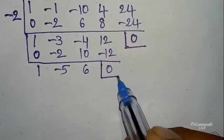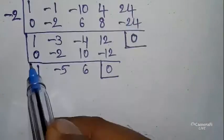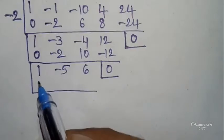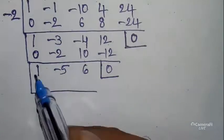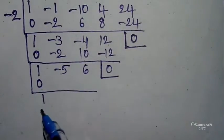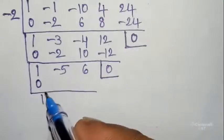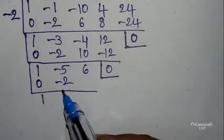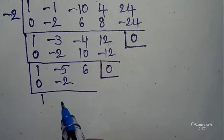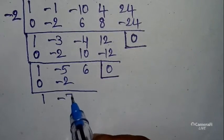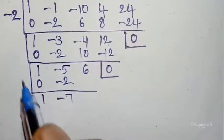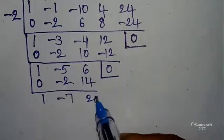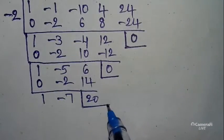Keep like this and take like this. First place you can write 0. Addition: 1 + 0 is 1. Cross multiply: 1 × -2 is -2. Addition: -5 - 2 is -7. Cross multiply: -7 × -2 is 14. 14 + 6 is 20, so you can write like this.